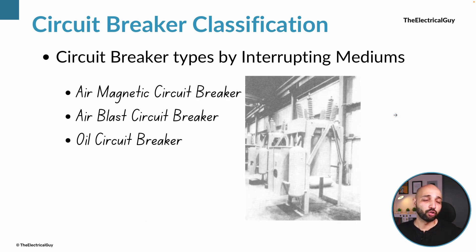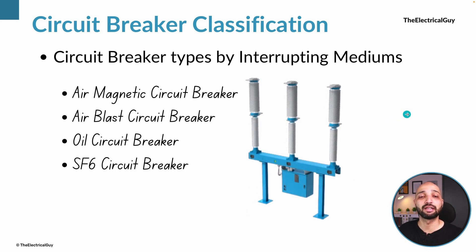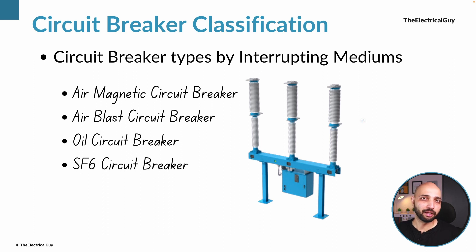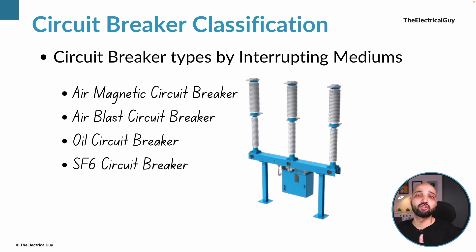Air blast circuit breakers were replaced by oil circuit breakers, where oil was used to interrupt the short circuit current and for cooling the arc. But oil circuit breakers also had many disadvantages and were completely replaced by the SF6 gas type circuit breaker. When SF6 circuit breakers were launched, they completely dominated the circuit breaker market. Inside this breaker, SF6 gas is used as both the interrupting medium and arc cooling medium, and its advantages are far better than oil or air technologies.